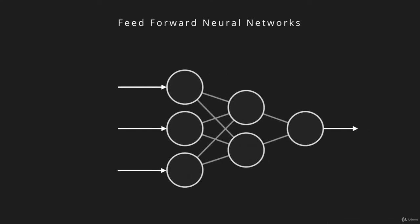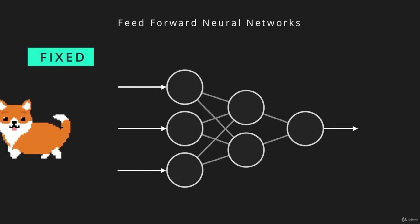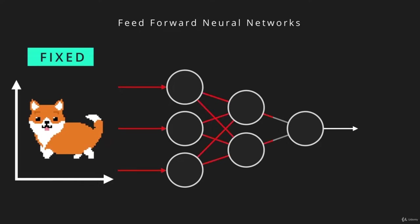In a feedforward neural network, inputs are fed to the network and transformed into an output. The information travels from the input layer to the output layer — there are no feedback loops. The output of each layer does not interact with previous layers. Feedforward neural networks are very useful in pattern recognition where the number of inputs and outputs is fixed, like in an image classification problem where an image of a dog with a fixed number of pixels is fed into a neural network to produce a label from a fixed number of classes.